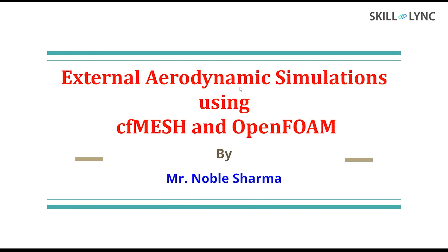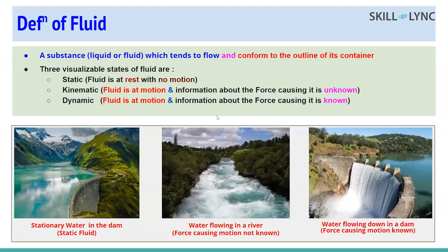Let us start with a very basic idea - what is the definition of a fluid? Any substance, a liquid or a gas, which tends to flow and can attain the shape of any container it is in, is a fluid. There are three states we can visualize for any fluid: static, kinematic, and dynamic. Static is when there is no motion and the fluid is at rest. Kinematic is where the fluid is in motion but we don't have information about what is causing that motion. Dynamic is where the fluid is in motion and we know what has caused that motion.